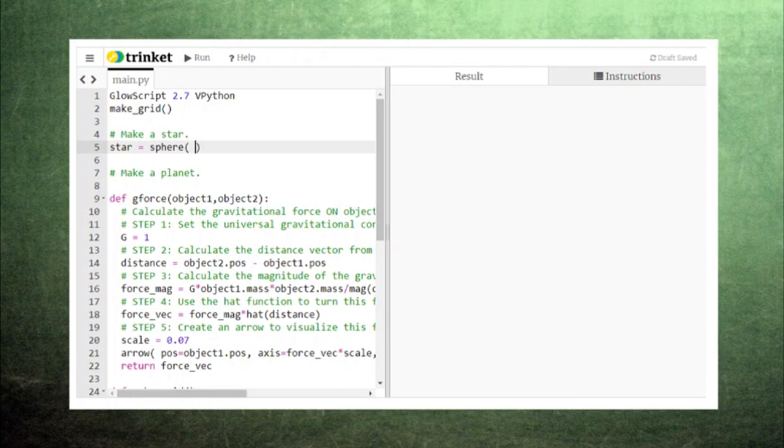We can create these objects by using VPython's sphere command. Each of these spheres will need four pieces of information. First, we need to give the position of each sphere as a vector. VPython works in three dimensions, so this vector needs an x coordinate, a y coordinate, and a z coordinate in that order.